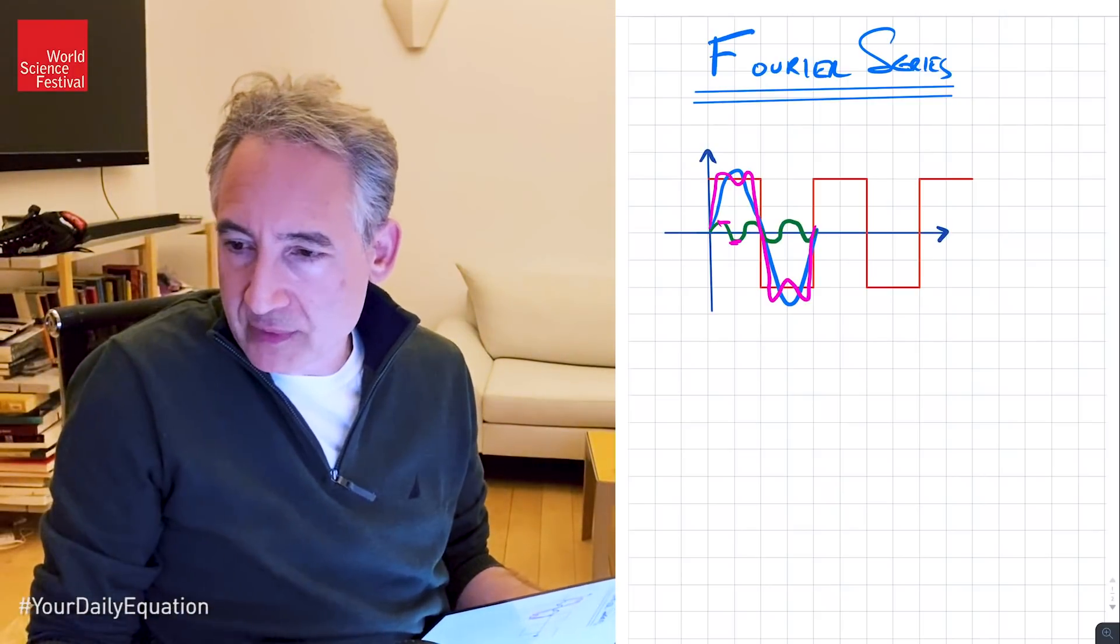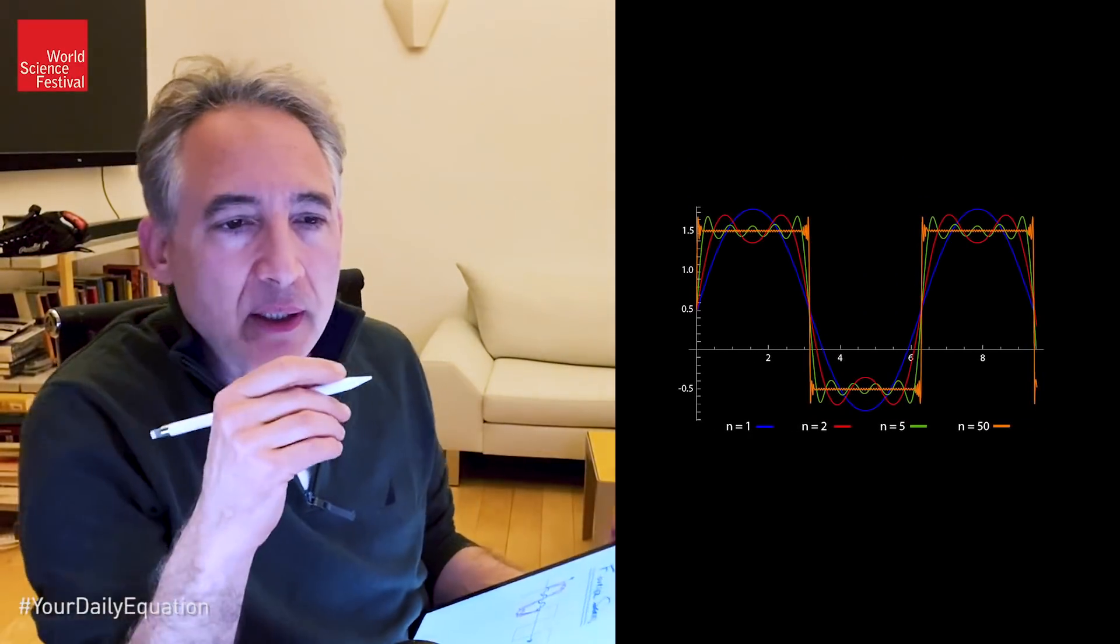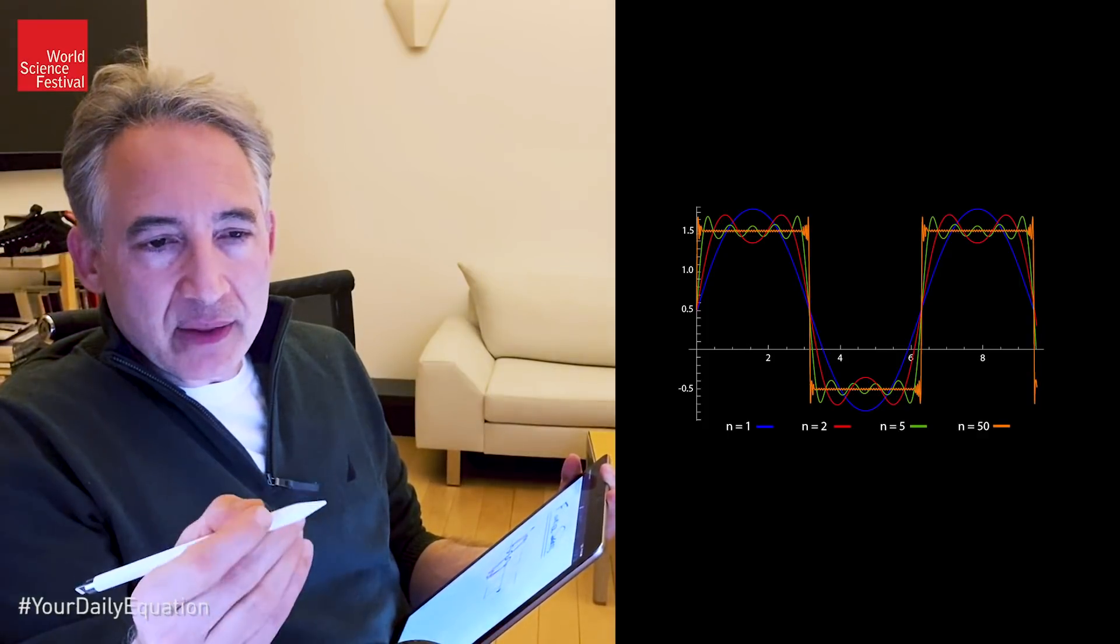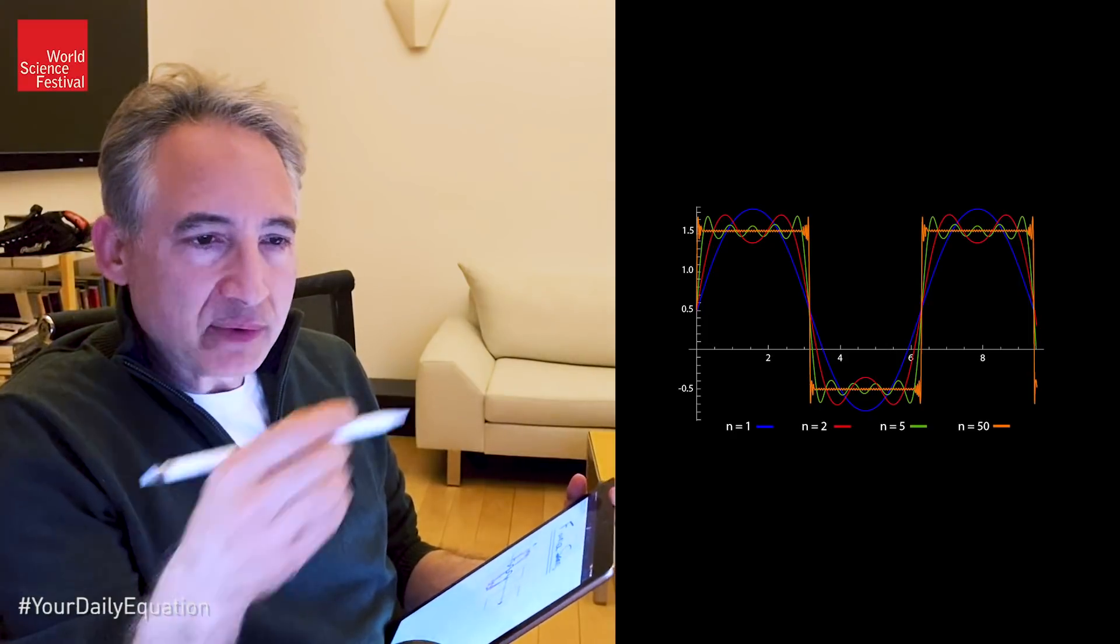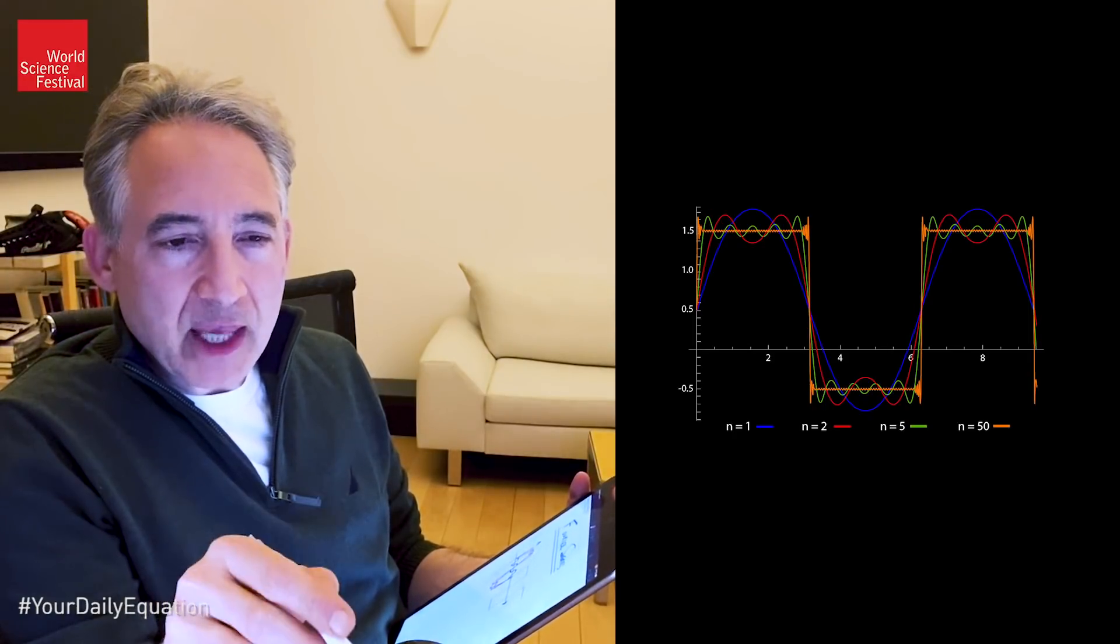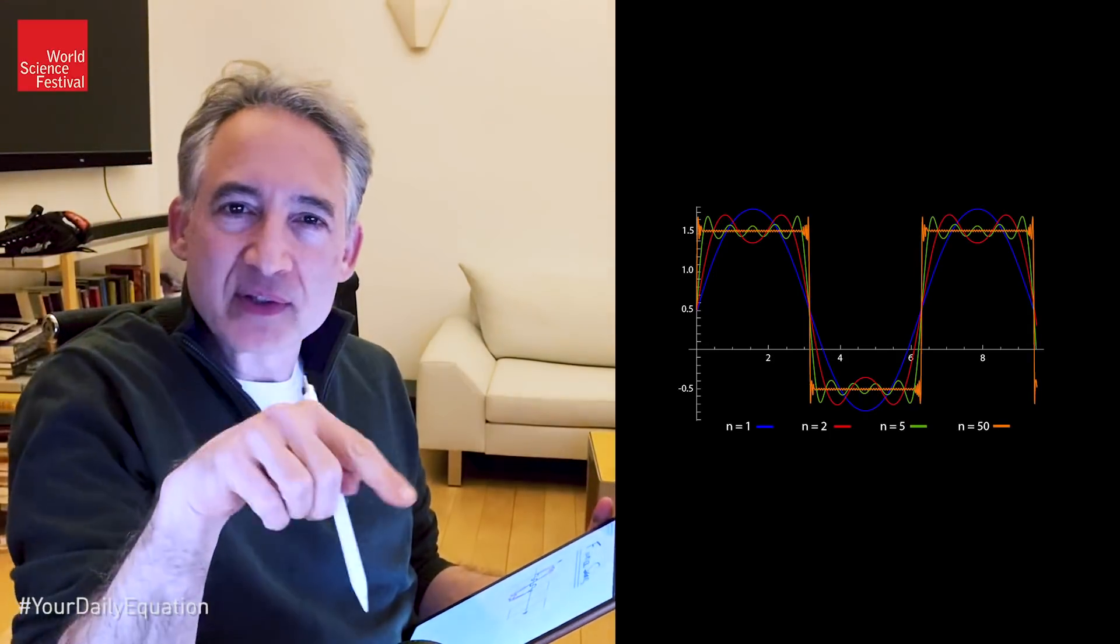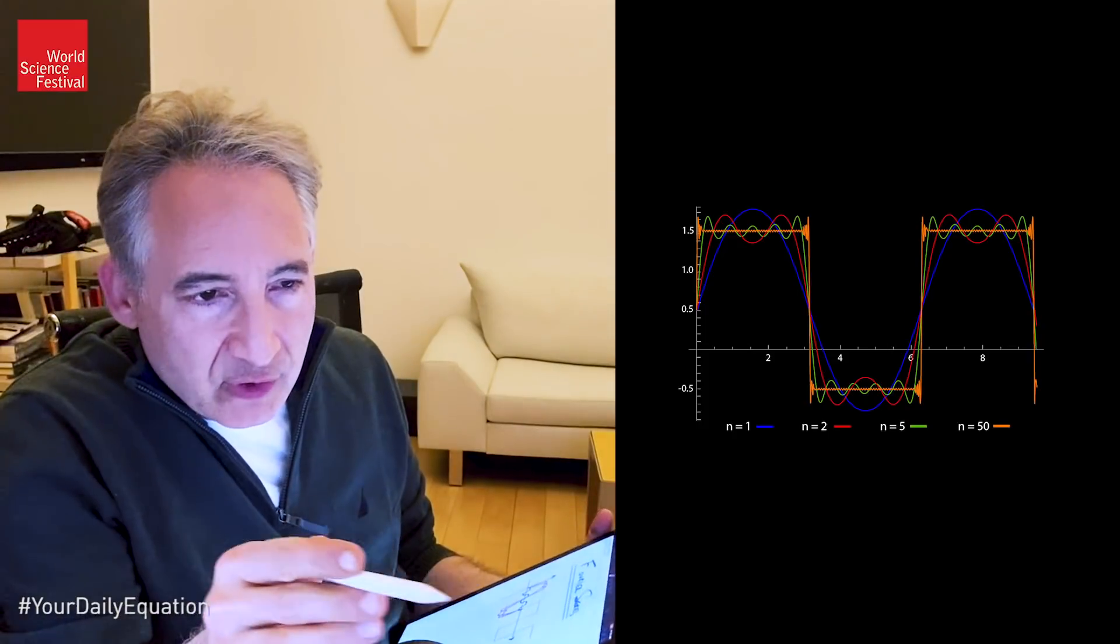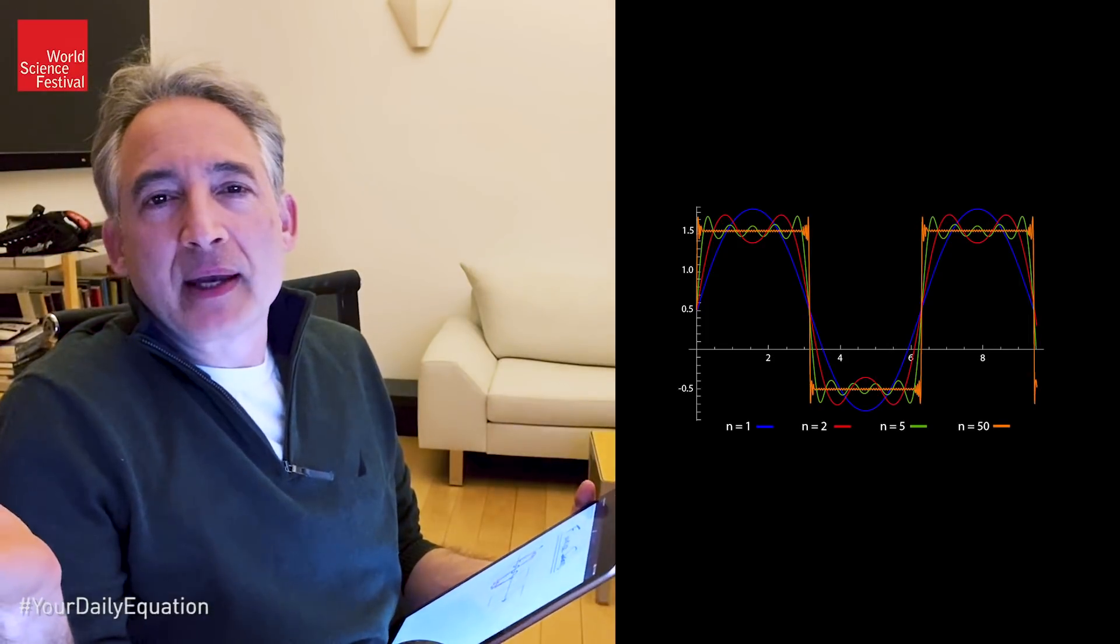And you could at least imagine that if I was to judiciously choose the height of additional sine waves and the wavelength, how quickly they are oscillating up and down, that by appropriately choosing those ingredients, I could get closer and closer to the red square wave. And indeed, I can show you—I can't do it by hand, obviously—but I can show you up here on the screen an example, obviously done with a computer.